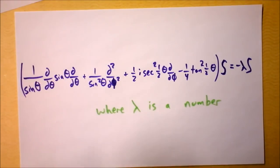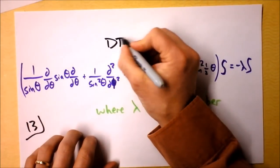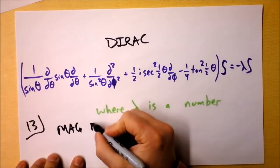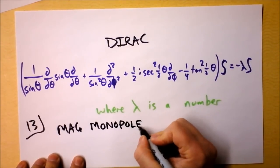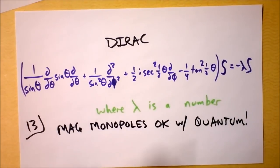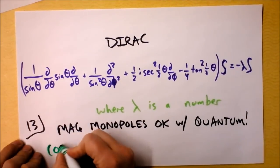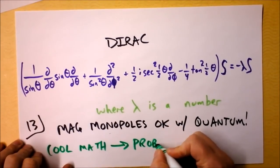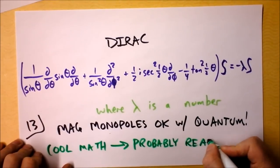So as he's finally concluding on page 13, Dirac says, here's Dirac's concluding thoughts. He says quantum mechanics does not really preclude magnetic monopoles. And so I'm going to write, mag monopoles okay with quantum. This is a big deal. That is okay. And then he says, one would be surprised if nature had made no use of it. I love this perspective of physicists. They discover something cool in math, and they say, probably real, because it's so cool.